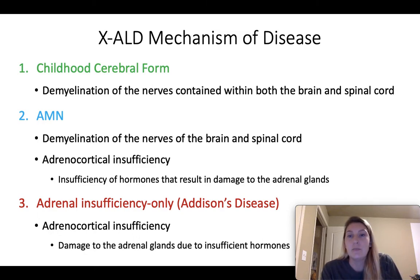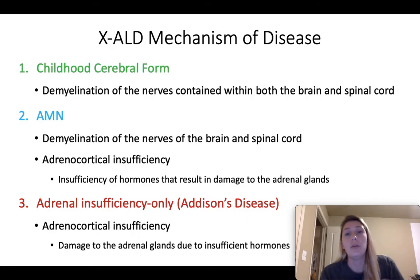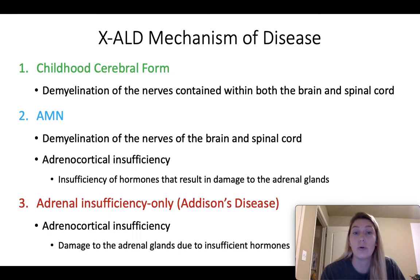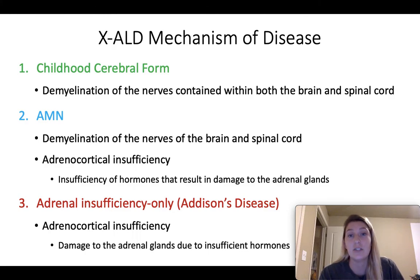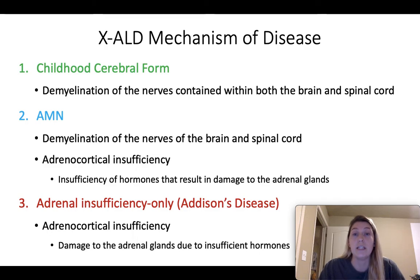The mechanism of disease, going through the three main types: the childhood cerebral form mostly affects the nervous system, resulting in demyelination of nerves within both the brain and spinal cord. The second type, AMN, involves both neurological and adrenal effects — demyelination of the nerves plus adrenocortical insufficiency, meaning an insufficiency of particular hormones, which results in damage to the adrenal glands. The third type, adrenal insufficiency only, just as its name suggests, has only adrenocortical insufficiency without demyelination of the nerves.